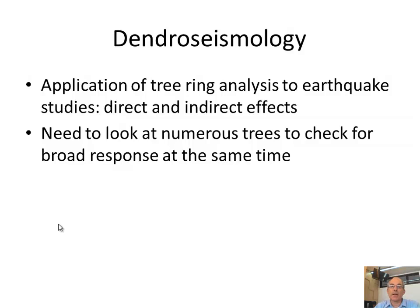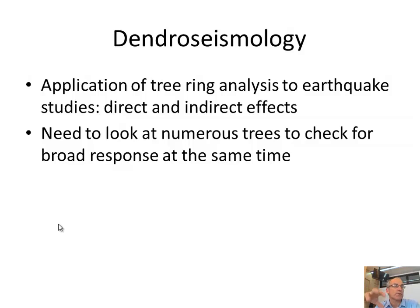In dendro seismology, the application of tree ring analysis to earthquake studies involves these direct and indirect effects. The main thing is you have to always look at more than one tree so you can know that one tree dying is not a coincidence. But if a group of trees all show the same change in their growth behavior at a certain time, then we know there was a bigger environmental effect, which could be an earthquake.